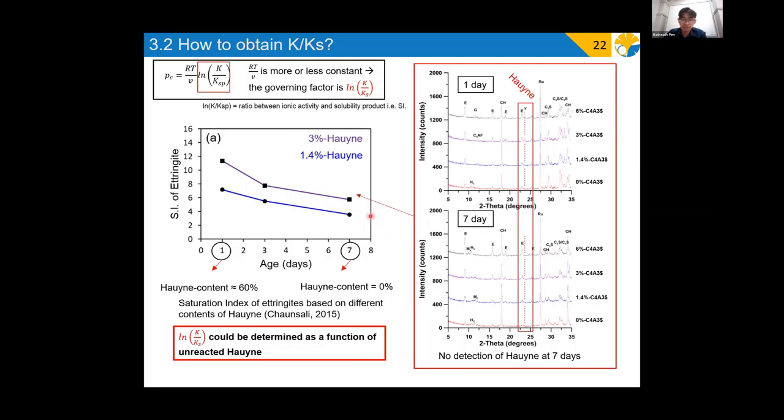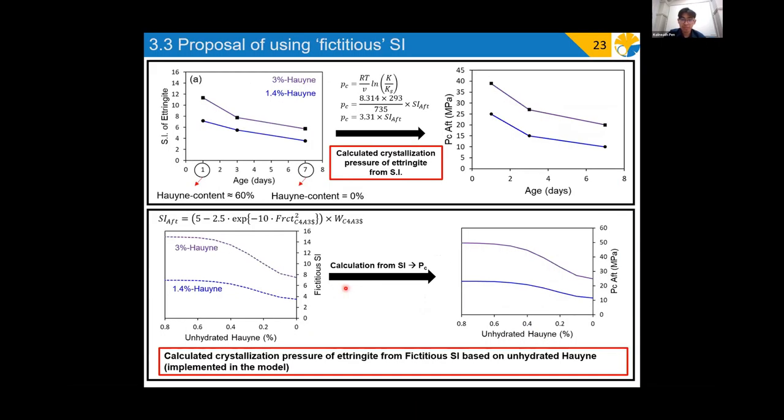However, one possible way to obtain the saturation index could be through relation by a function of unreacted reactants. Based on a study by Chaun Sali, the saturation index of ettringite was experimentally obtained at different amount of C4A3S added. Based on their XRD result and the diffraction pattern, they showed that the C4A3S content at one day is around 60%, whereby C4A3S is completely finished by seven days. So instead of using the ionic concentration, an imaginary or fictitious saturation index for ettringite based on unhydrated C4A3S is proposed. Once we get the saturation index, crystallization pressure is simply calculated by multiplying with RT over nu, and the same logic was implemented for the case of free lime.